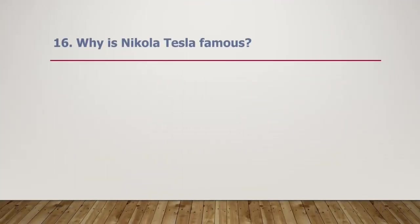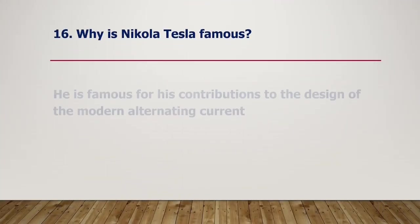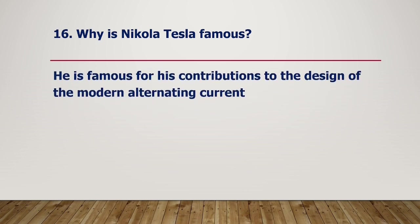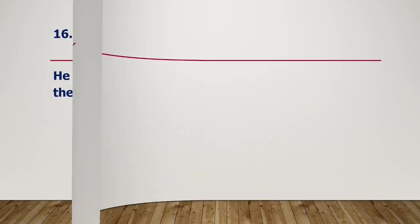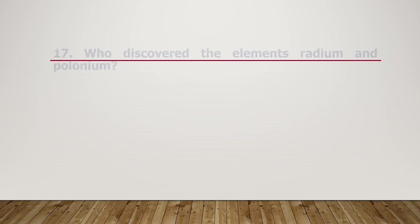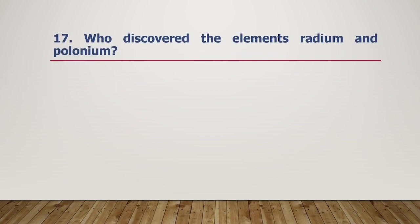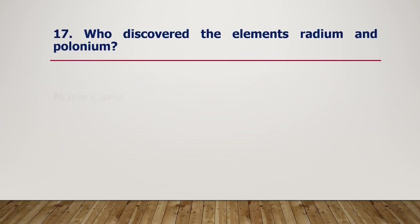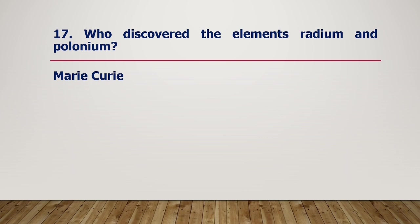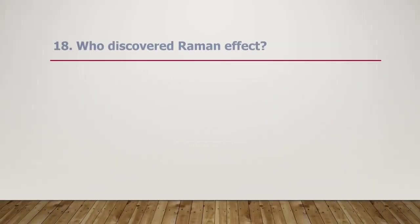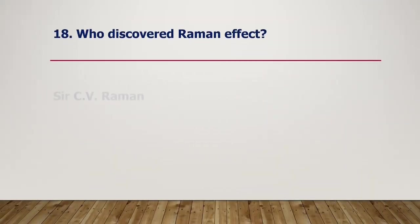Why is Nikola Tesla famous? He is famous for his contributions to the design of the modern alternating current. Who discovered the elements radium and polonium? Marie Curie.